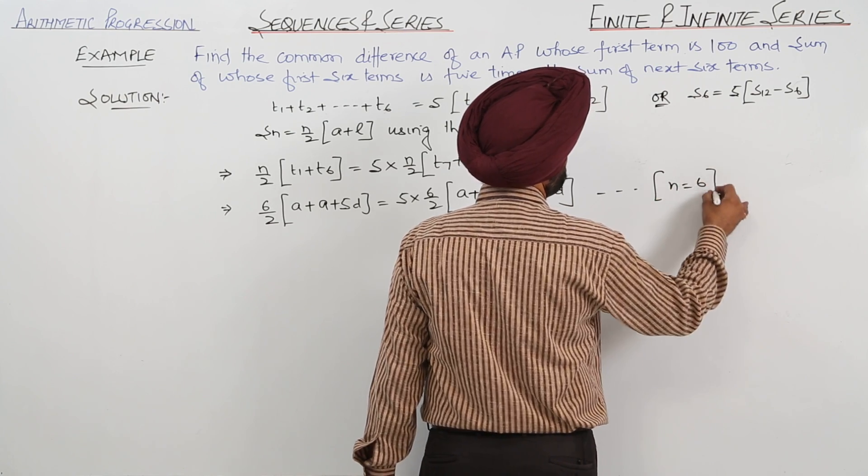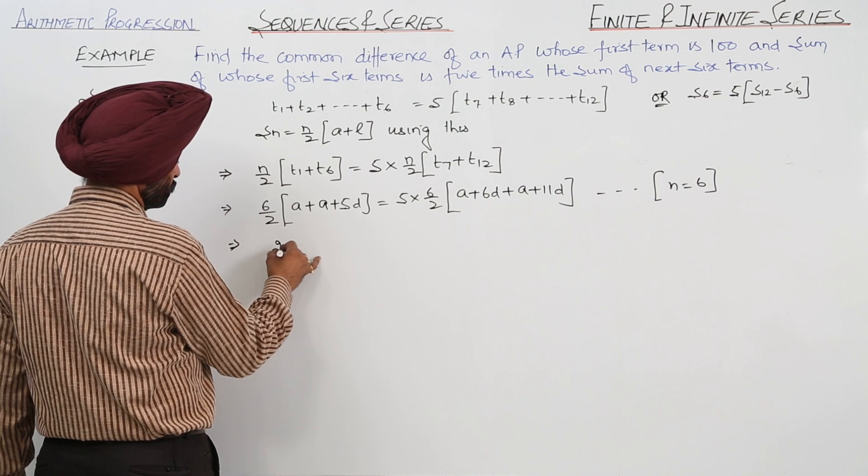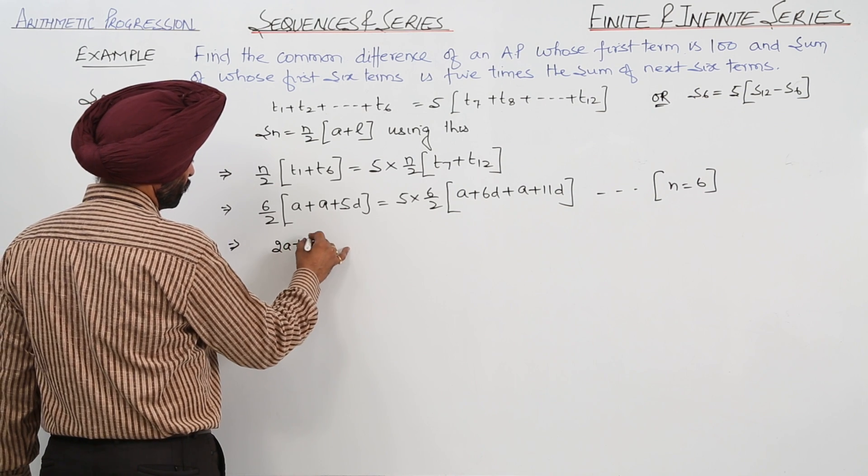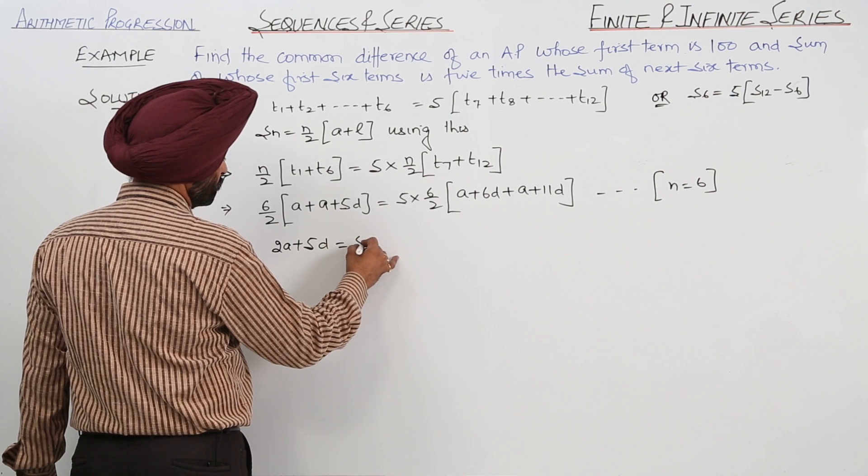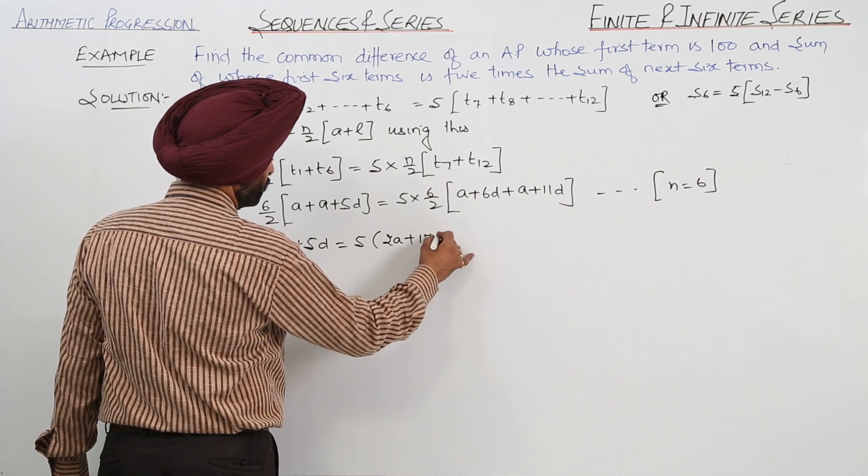N is equal to 6. Now this becomes 2A plus 5D, is equal to 5 times 2A plus 17D.